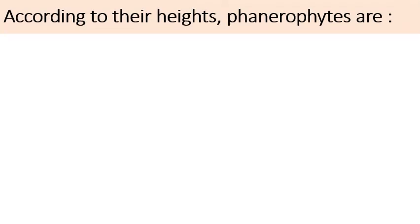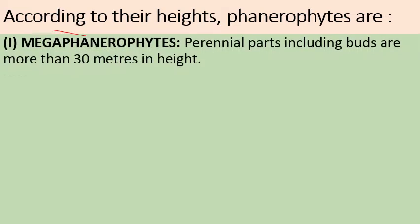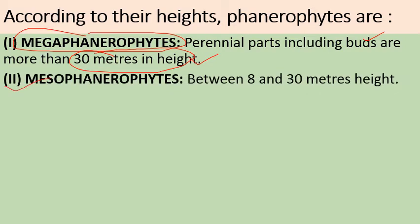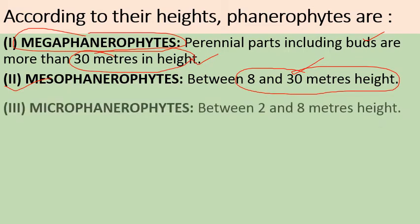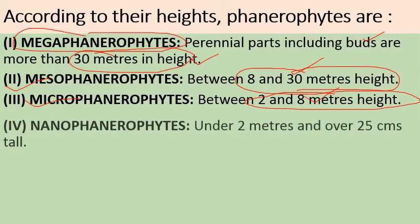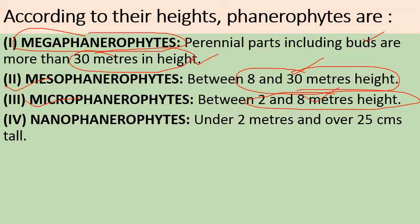According to height, Phanerophytes can be further classified. First are Mega-phanerophytes — perennial parts including buds — more than 30 meters in height. Next are Meso-phanerophytes, with perennating structures between 8 to 30 meters in height. Then Micro-phanerophytes, with perennating structures approximately 2 to 8 meters in height. Finally, Nano-phanerophytes, with perennating structures under 2 meters but above 25 centimeters from the ground surface.